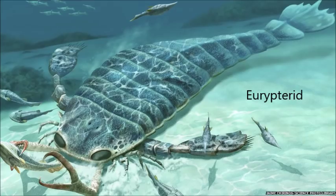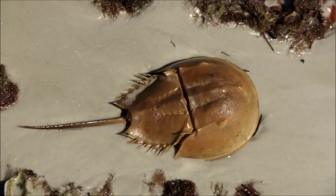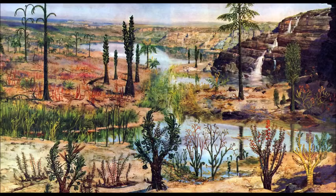Previously, it was thought that scorpions were originally aquatic and moved to land later, having been identified as close relatives of the marine Eurypterids, commonly called sea scorpions. However, it would appear that Eurypterids are more closely related to horseshoe crabs, indicating that the last common ancestor of all arachnids was terrestrial.